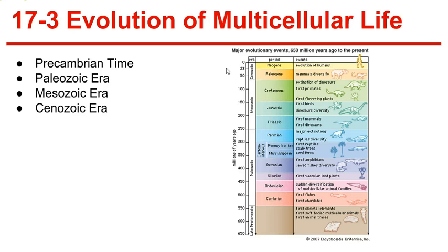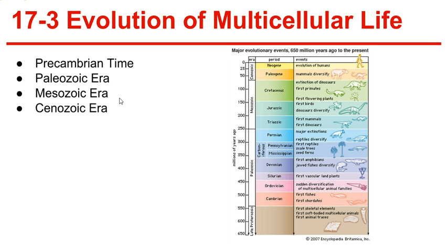The mass extinction at the end of the Paleozoic killed 95% of all organisms, however both the fish and reptile populations survived. Next, the Mesozoic era. Events during the Mesozoic include the increasing dominance of dinosaurs, and the Mesozoic is marked by the appearance of flowering plants. During the Triassic period, the main forms of life were fishes, insects, reptiles, and cone-bearing plants, and the first dinosaurs appeared 225 million years ago.